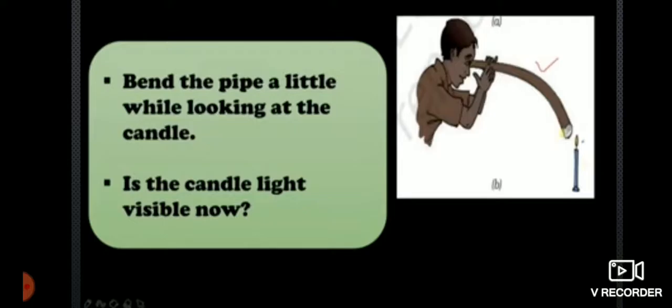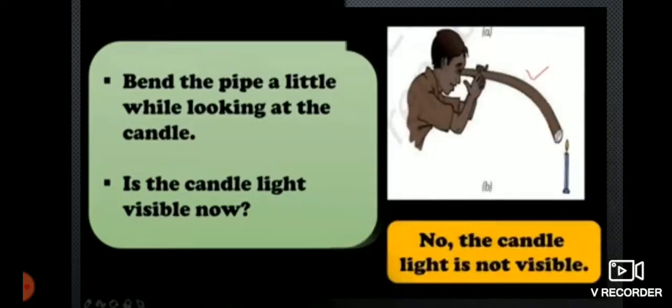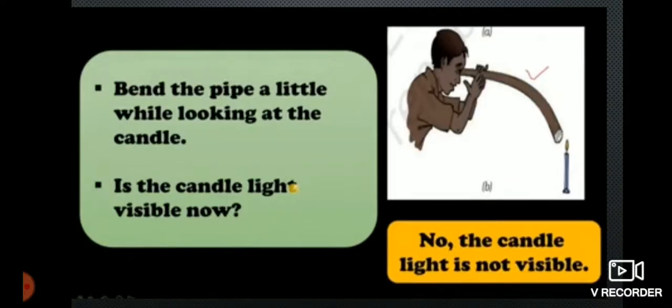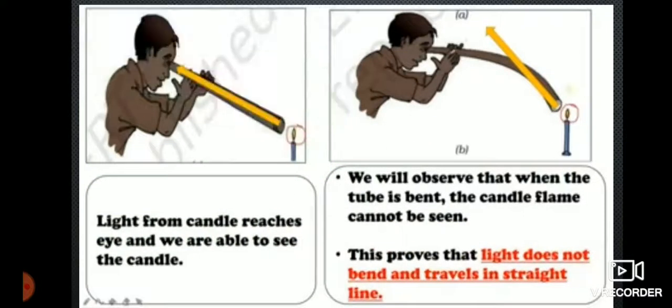Bend the pipe a little while looking at the candle. Is the candlelight visible now? No, the candlelight is not visible. Light from the candle reaches the eye and we are able to see the candle the first time. But in the second time, when the tube is bent, the candle flame cannot be seen. This proves that light does not bend and travels in a straight line.